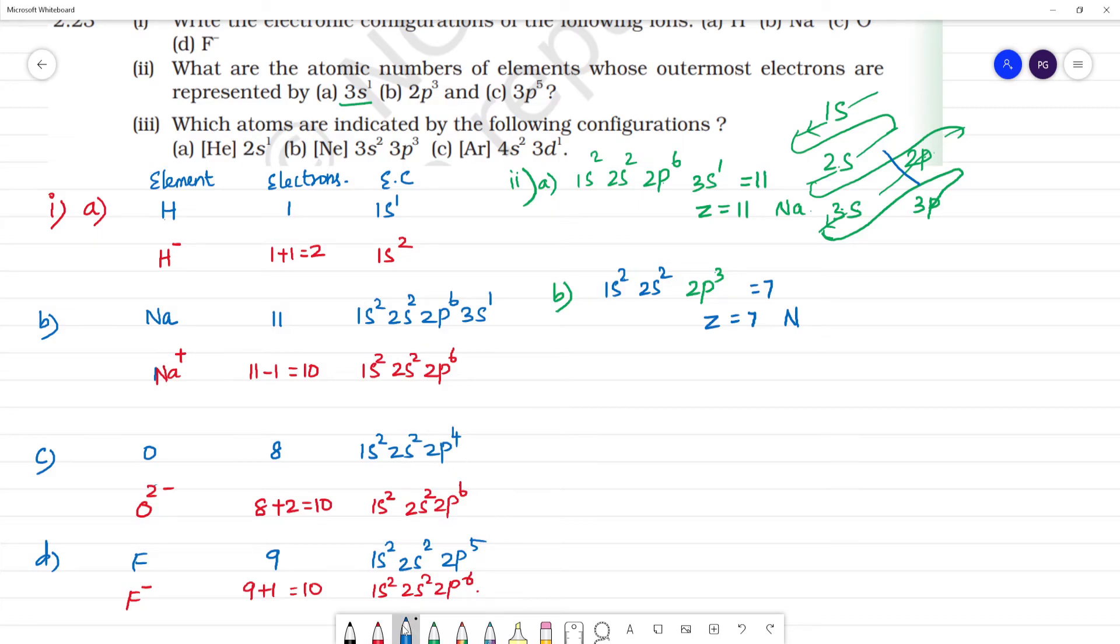C is 3p5. To fill up to 3p5, we write 1s2, 2s2, 2p6, 3s2, 3p5. Total number of electrons is 10 plus 2 plus 5 equals 17 electrons. So atomic number equals 17, and this is chlorine.